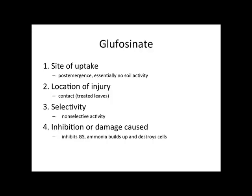Glufosinate is a post-emergence product with essentially no soil activity. It contacts wherever the herbicide contacts the leaves of the plant — obviously, better coverage means better control. It is non-selective, so whatever you spray it on, unless it is a genetically modified crop, it is going to kill it. It inhibits glutamine synthetase (GS), ammonia builds up, and destroys the cell.